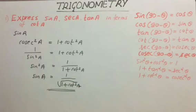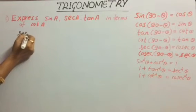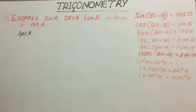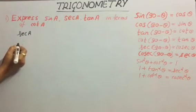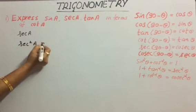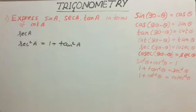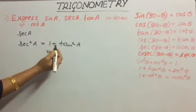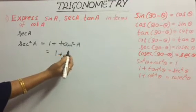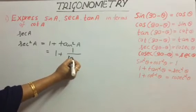This is the expression needed. Now we will consider secant a. We have to represent secant a in terms of cot a. Let us use the identity sec²a = 1 + tan²a. But we need the expression in terms of cot. We know that tan is the reciprocal of cot, so we write tan²a = 1/cot²a.